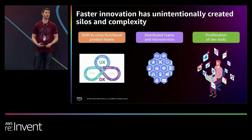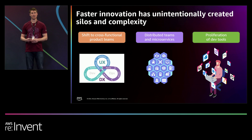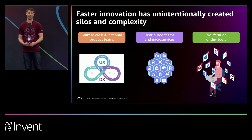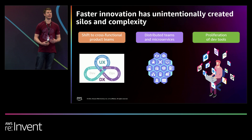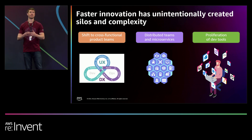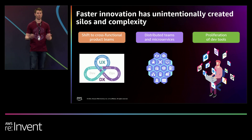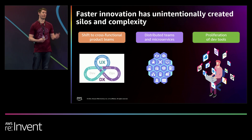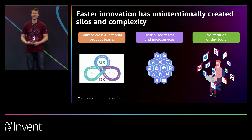We're working more cross-functionally than ever. These productized organizations are great — we're working agilely — but we've actually seen this introduce silos across and within the engineering org itself. Second is microservices and API-driven architectures. They have teams spread across more things, there's more breadth to work across, and coordination is becoming more difficult. Engineering teams are more dependent than ever on internal services, external services, and vendors.